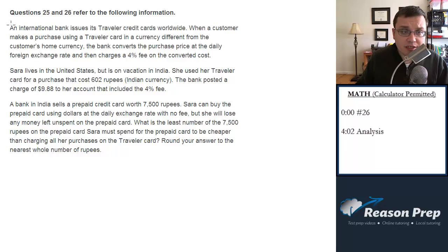The first part of this question we've read previously in number 25, so I'm not going to reread it. I'm just going to read this next part. So everything else that was true of the last question is true here. A bank in India sells a prepaid credit card worth 7,500 rupees. Sarah can buy the prepaid card using dollars at the daily exchange rate with no fee, but she will lose any money left unspent on the prepaid card. What is the least number of the 7,500 rupees on the prepaid card Sarah must spend for the prepaid card to be cheaper than charging all her purchases on the traveler card? Round your answer to the nearest whole number of rupees.